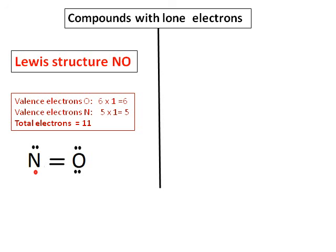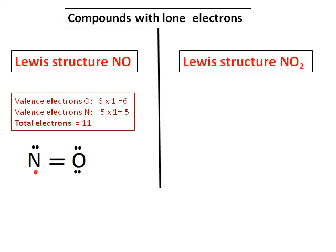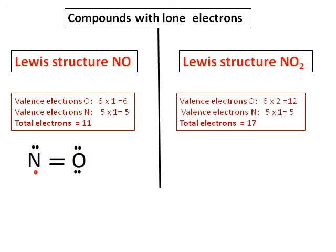One more example: the Lewis structure of NO2. NO2 has 5 electrons from nitrogen and 12 from oxygen, therefore 17 electrons in total. The central atom, nitrogen, has a single electron around it.